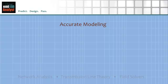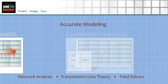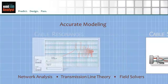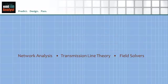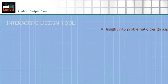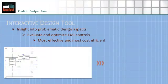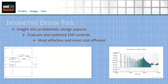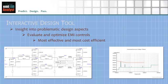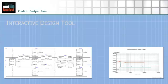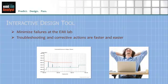EMI Analyst excels at accurately modeling noise sources, component parasitics, and cable resonance and shielding by combining powerful network analysis, transmission line theory, and field solvers. As an interactive design tool, EMI Analyst provides insight into aspects of the design that are most problematic, allowing EMI control options to be evaluated and optimized during initial product design when they are most effective and most cost efficient. Failures at the EMI lab can be minimized so troubleshooting and corrective actions are faster and easier.